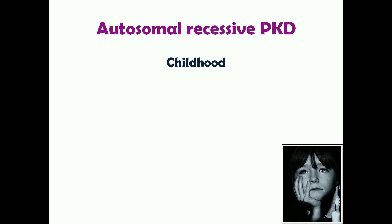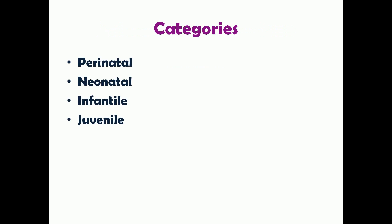Now let's discuss autosomal recessive polycystic kidney disease, which occurs in childhood. There are four main categories, classified based on time of onset: perinatal (around the time of birth), neonatal (within the first week of birth), infantile (up to the first year of life), and juvenile (from one year of life until the onset of adolescence).